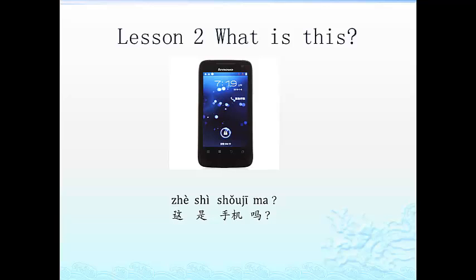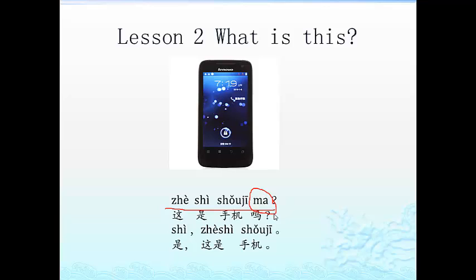Now can you ask me a question? 这是手机吗? My answer would be: 是, 这是手机. 吗 is a question particle — it's put at the end of a statement to make it a yes-or-no question. We don't need to change the word order of the sentence.